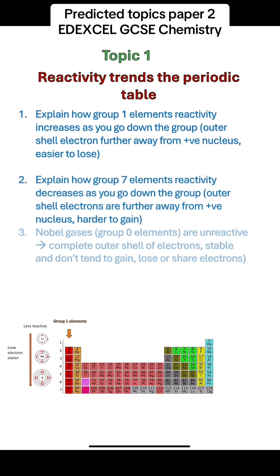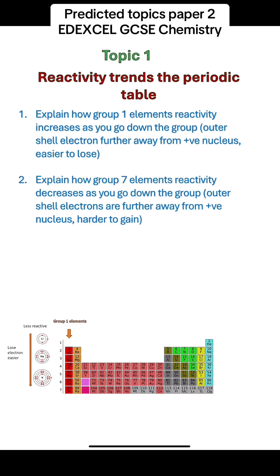Explain how group 7 element reactivity decreases as you go down the group. The outer shell electrons also become further away from the nucleus, so they are less attracted to the nucleus, and so it becomes harder to gain an electron.